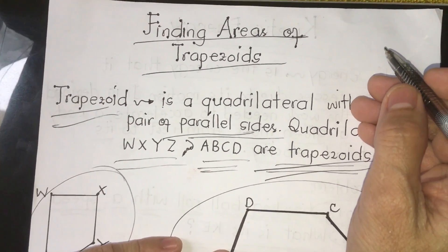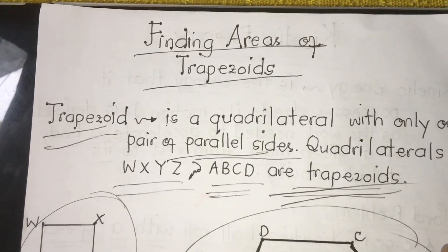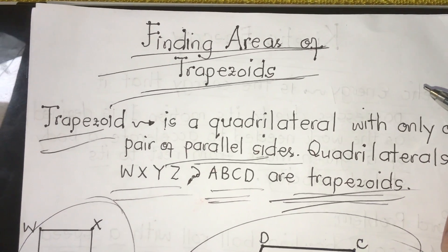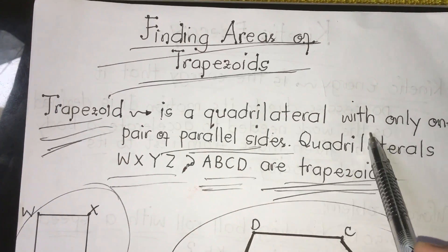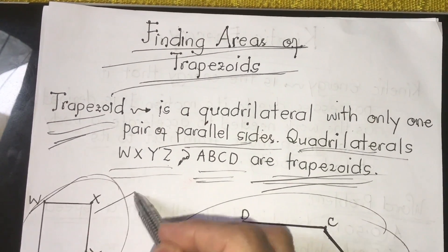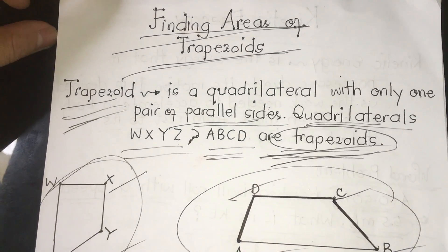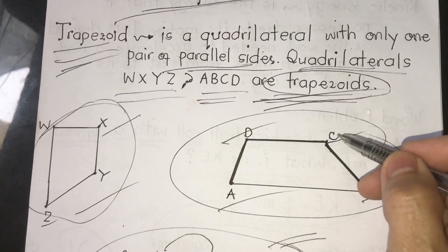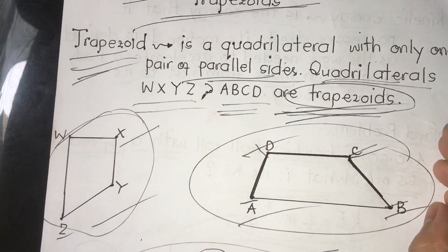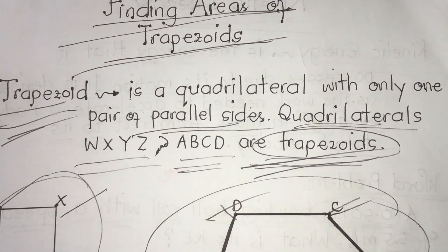Welcome back to Ram's Tutorial. If you are new here on my channel, please don't forget to subscribe and hit the notification bell so that you're updated on my latest videos. Today we're going to discuss finding areas of a trapezoid. Remember, according to the book, a trapezoid is a quadrilateral with only one pair of parallel sides. In this video you will watch and learn how you can find the area of a trapezoid.